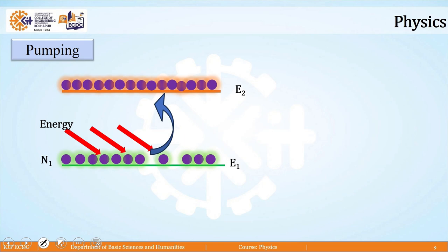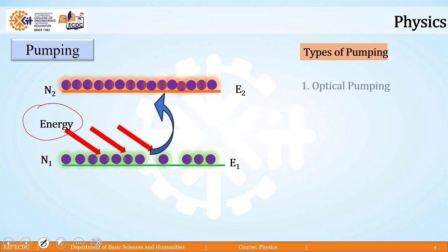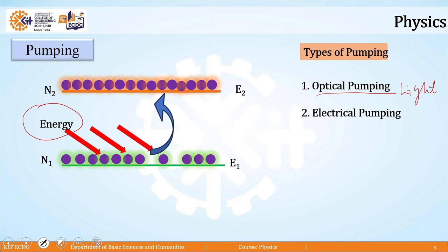Based on the type of energy provided, there are certain types of pumping. If pumping is done with the help of light, it is called optical pumping. If electrical energy like a battery or cell is used, it is called electrical pumping. In some lasers, chemical energy is used, which is called chemical pumping. These are the different types of pumping.